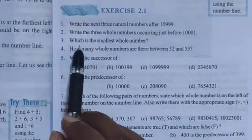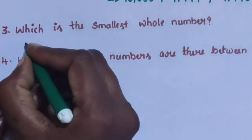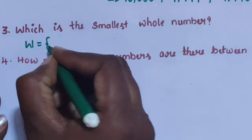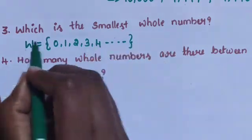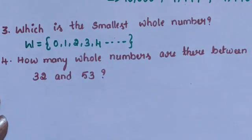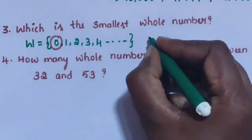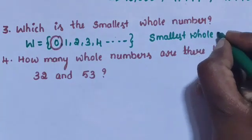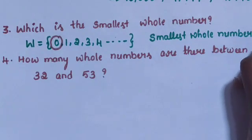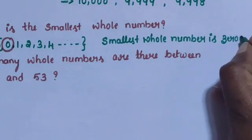Question number 3: Which is the smallest whole number? The smallest whole number is 0.